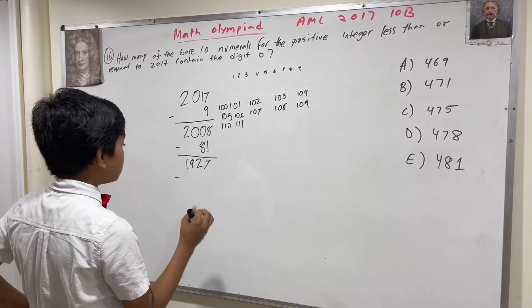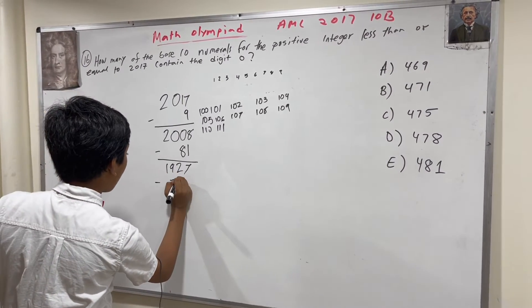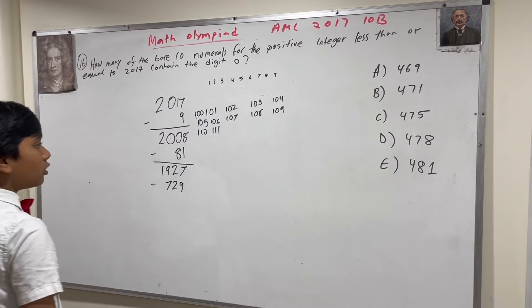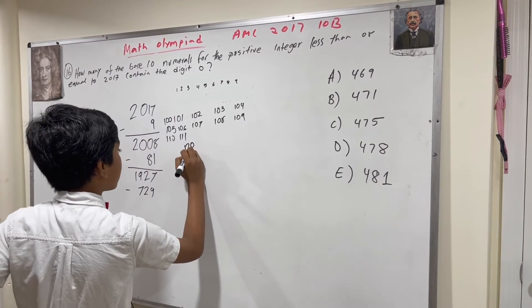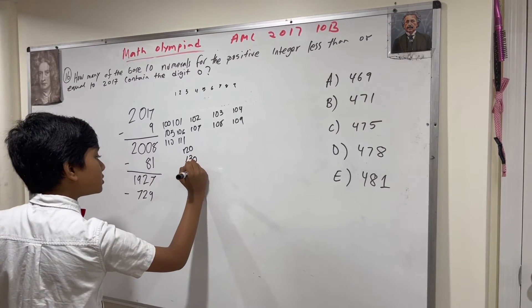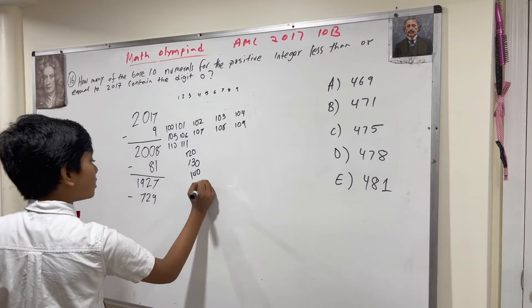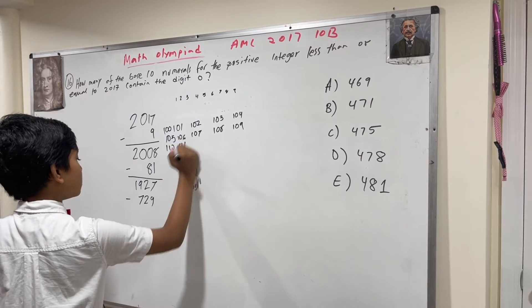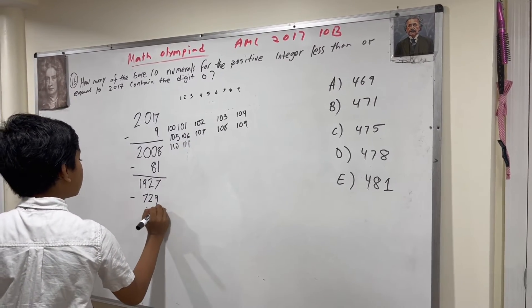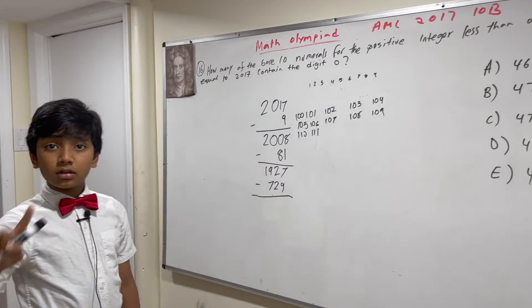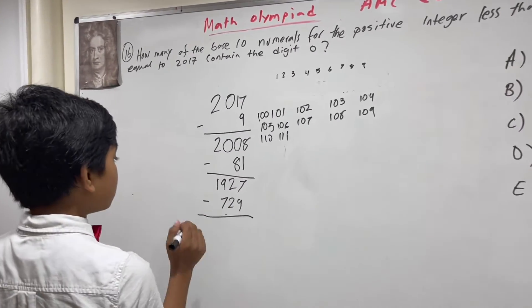So, for all of these numbers, and also remember, you're going to come through several more numbers that have these things. That means there are 729 in total that do not contain any 0s.